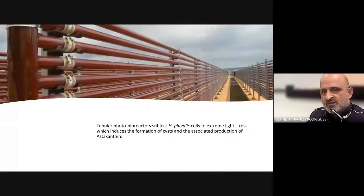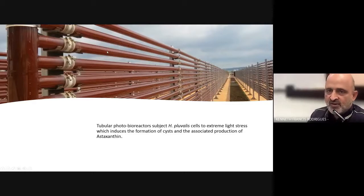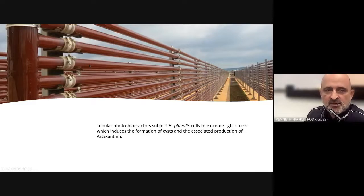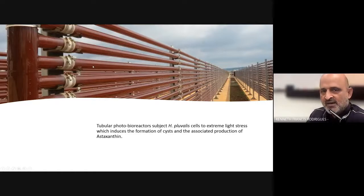The other option is to produce Haematococcus in tubular systems. These tubular systems are very expensive as the tubes are composed of glass. A further disadvantage is that Haematococcus pluvialis will line the interiors of these tubes, reducing the photo-efficiency, and the tubes must be cleaned. Industrial processes generally rely on cleaning these tubes using some kind of internal mechanism repeatedly to ensure that photosynthetic efficiency is maintained.